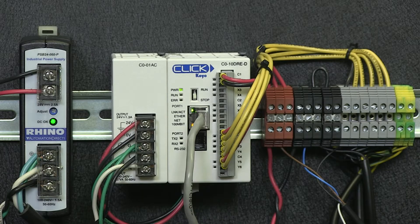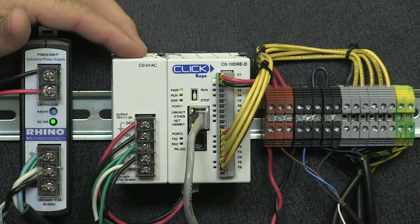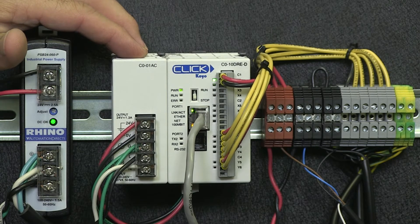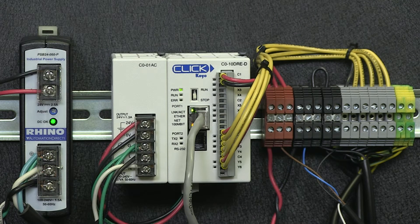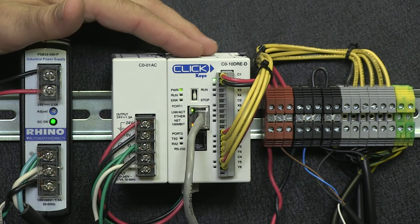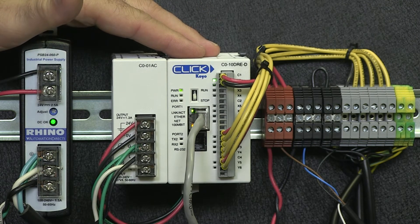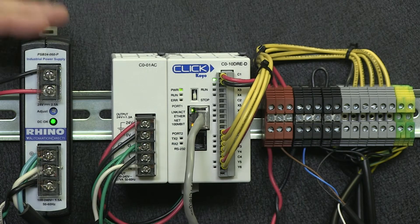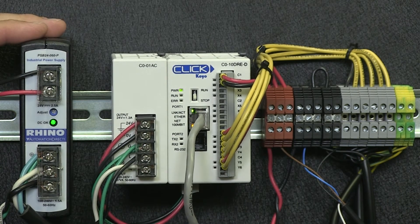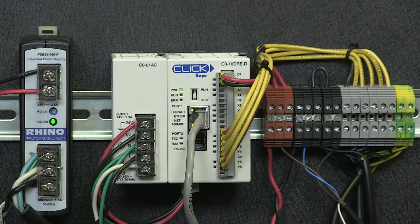Since we have 120 volts AC supply voltage, we need to use this Click power supply because the Click PLC requires 24 volts DC to operate. You may be thinking, why didn't we omit this part and just power our Click PLC from the main 24 volt DC Rhino power supply? Well, we could have, but it's not good practice to have your control power and your I/O power on the same source.